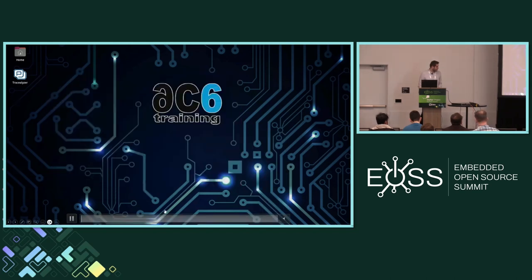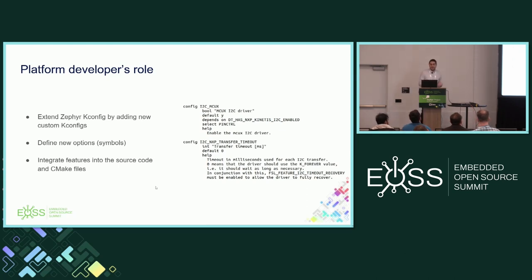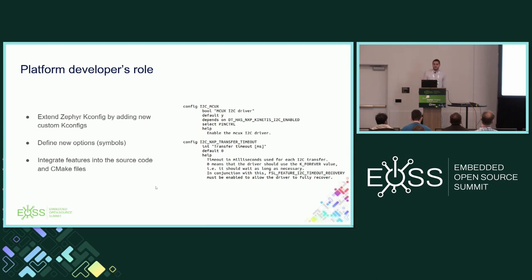For the platform developer role, if you're extending Zephyr's internals, you can add new custom Kconfig options. You write a Kconfig file with syntax like 'config MY_OPTION', specify the type, and so on. At the beginning, we recommend just reading them to understand the syntax. When you use menuconfig or guiconfig, it parses these Kconfig files and shows them to you in a visual, user-friendly way.